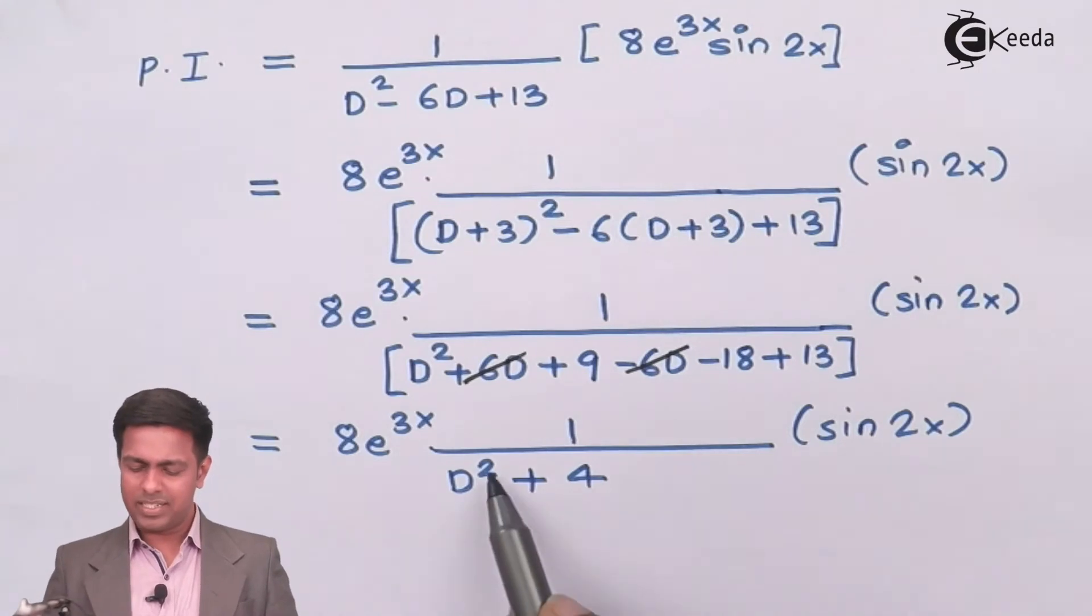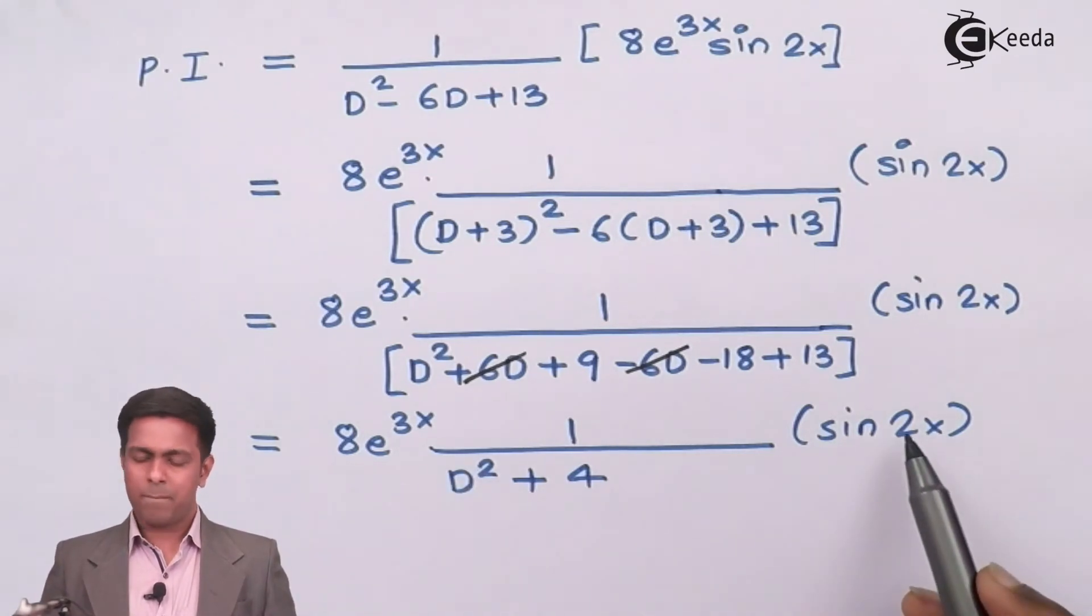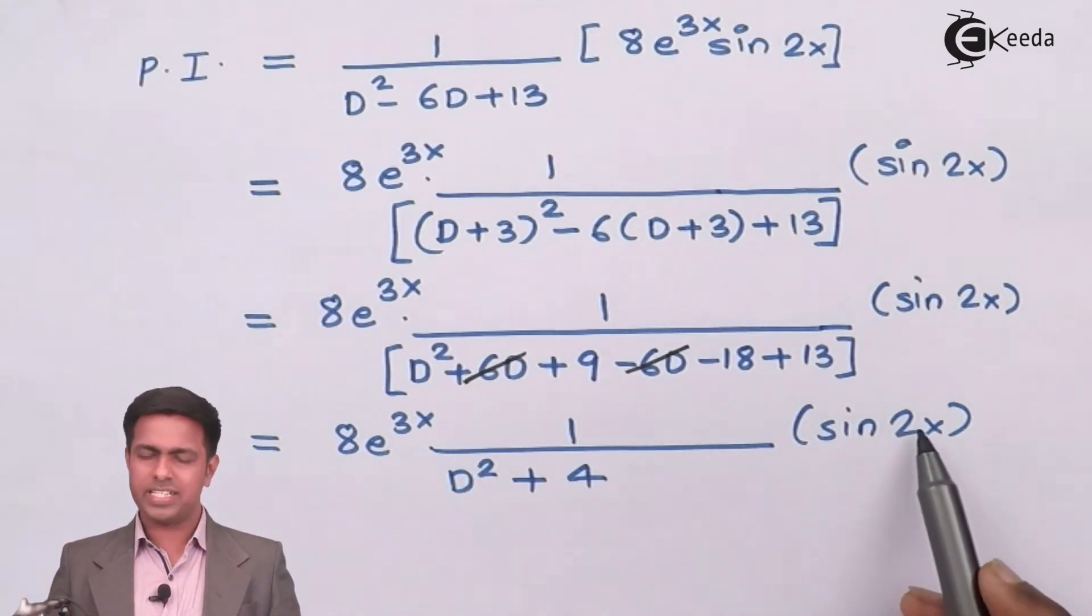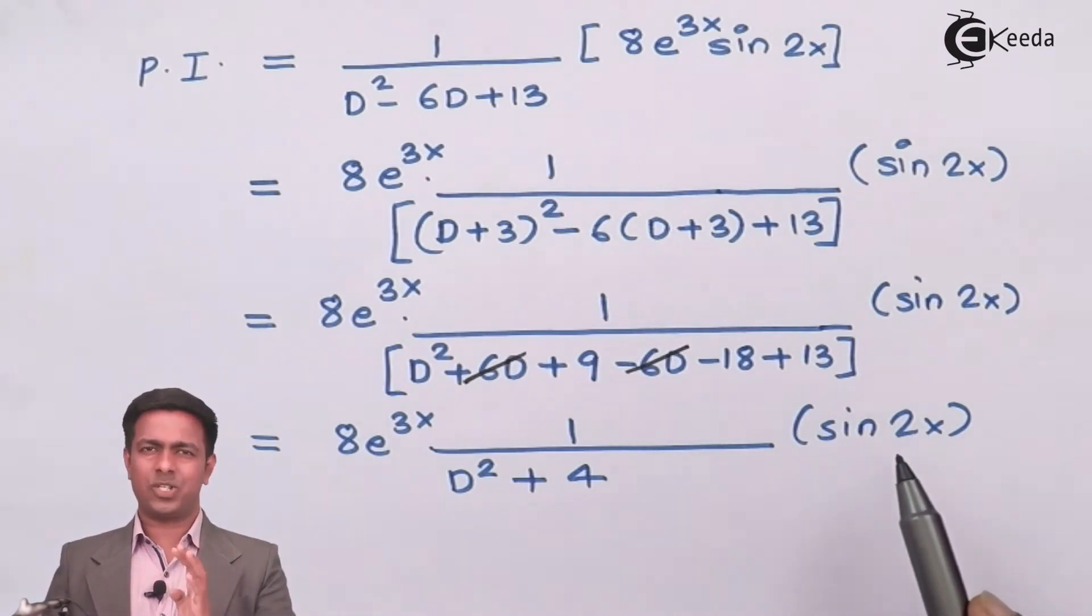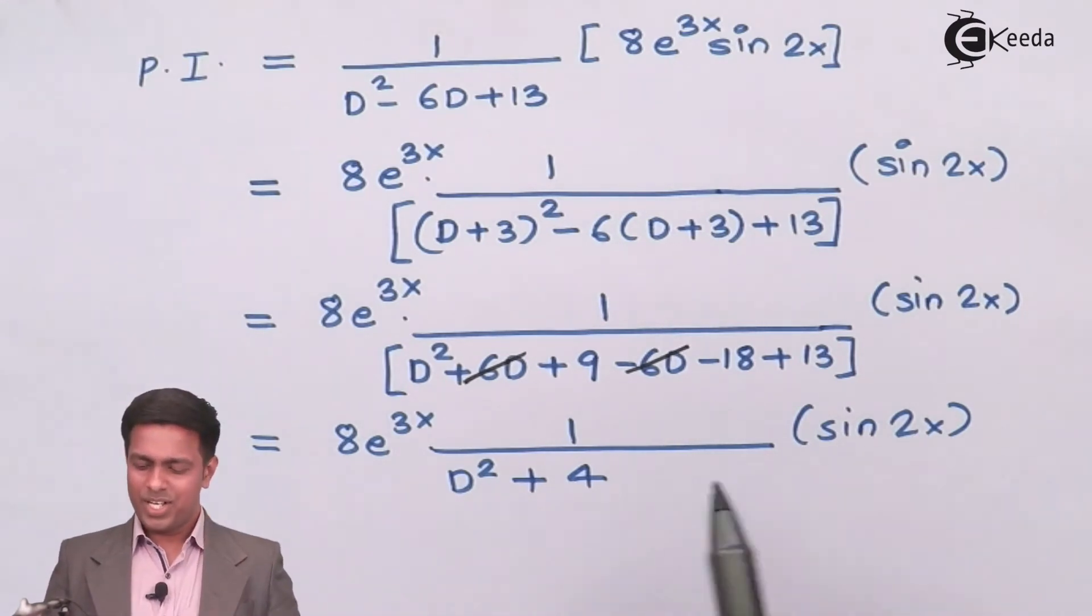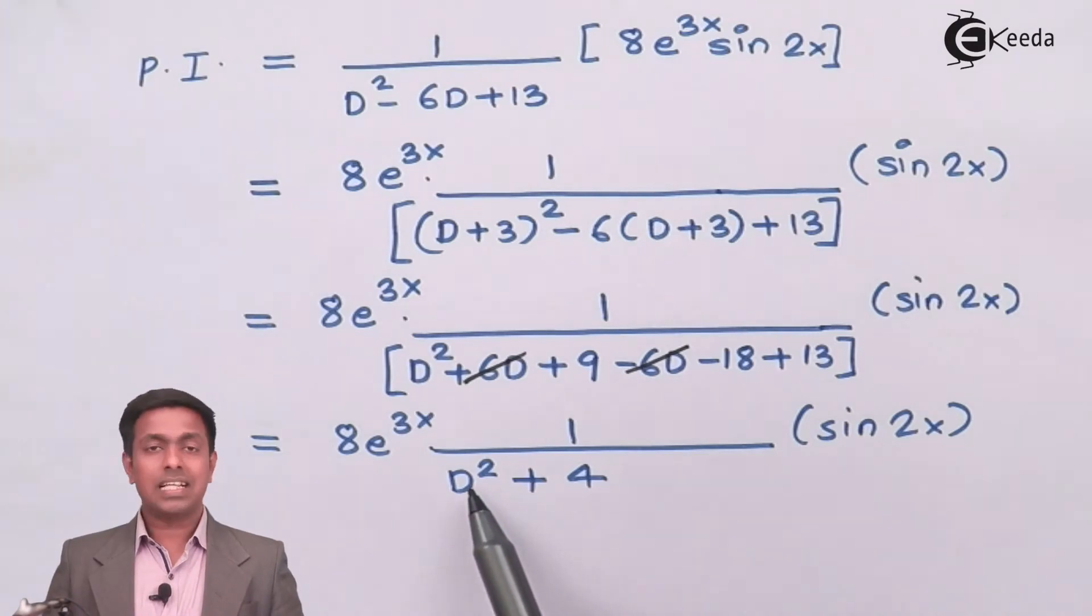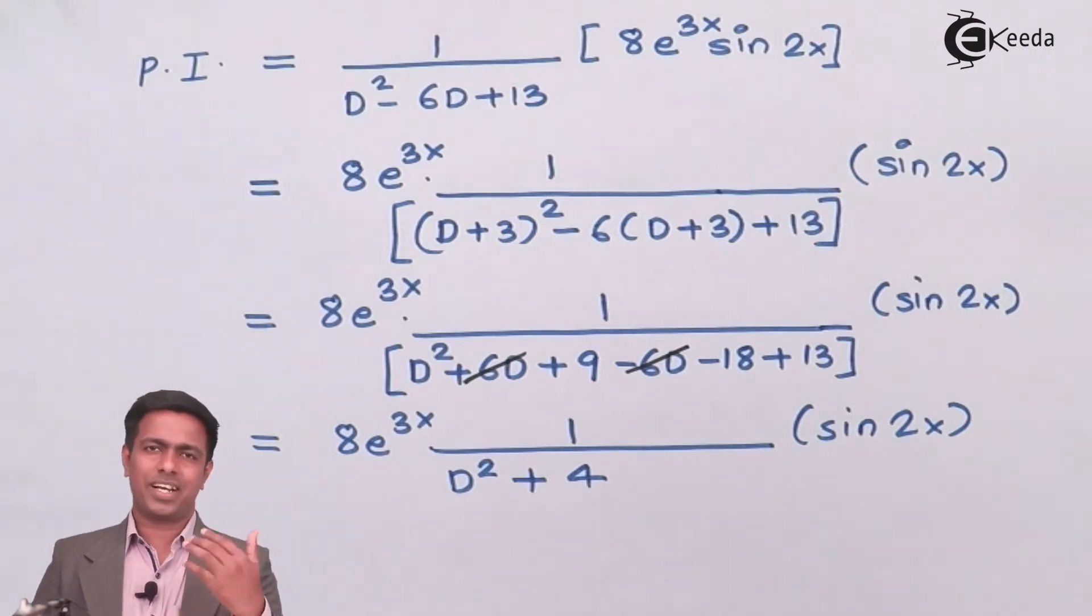I will replace the D² with -4 because 2 is a so -a² is -4. But if I replace this D² with -4 I will get -4 + 4 = 0 and denominator can't be 0. Hence we will find out the derivative of this.